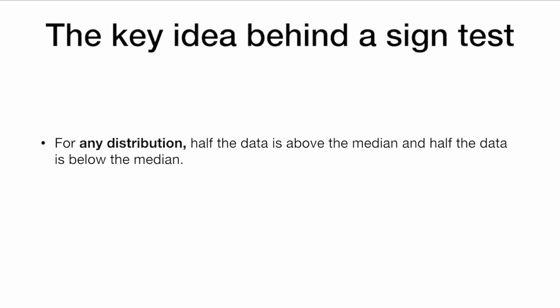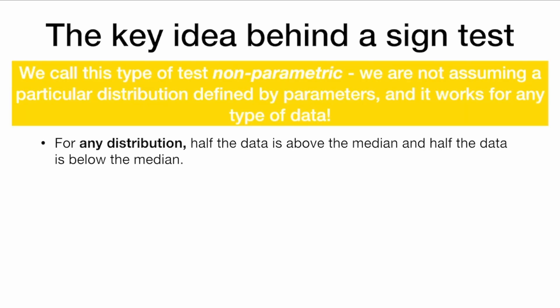So the key idea behind a sign test is that for any distribution, half the data is above the median and half the data is below the median. We call this type of test non-parametric. And we call it non-parametric because we are not assuming a particular distribution defined by parameters. And so this works for any type of data.